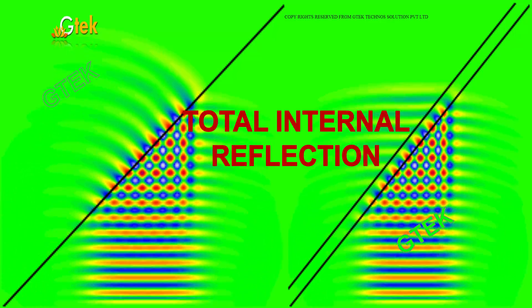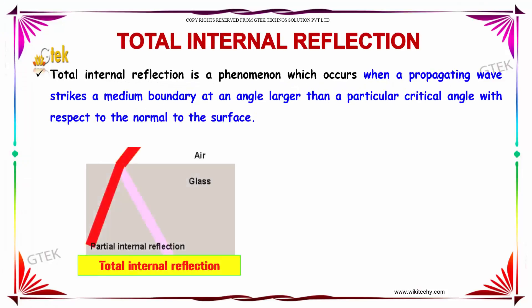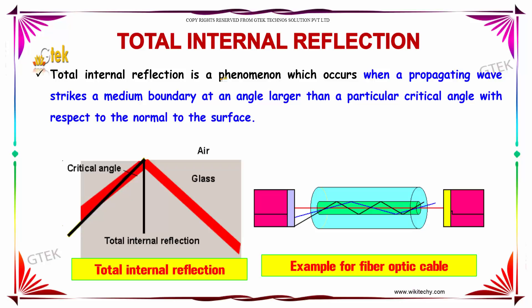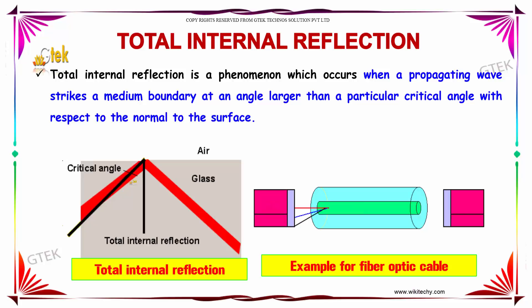Here is about total internal reflection. What is total internal reflection? It is a phenomenon which occurs when a propagating wave strikes a medium boundary at an angle larger than a critical angle with respect to the normal of the surface.